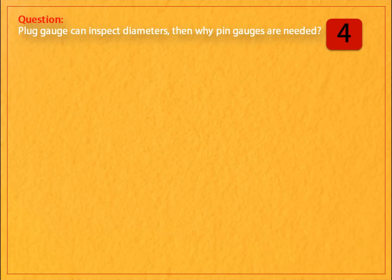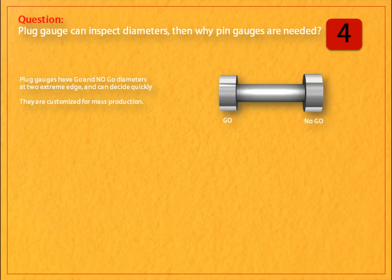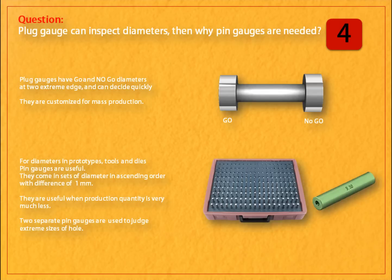Question: plug gauge can inspect diameters, then why are pin gauges needed? Answer: plug gauges have go and no-go diameters at two extreme edges and can decide quickly. They are customized for mass production. For diameters in prototypes, tools, and dies, pin gauges are useful.